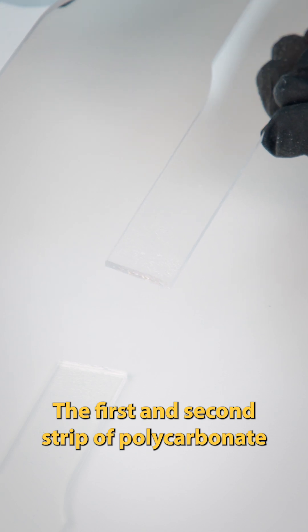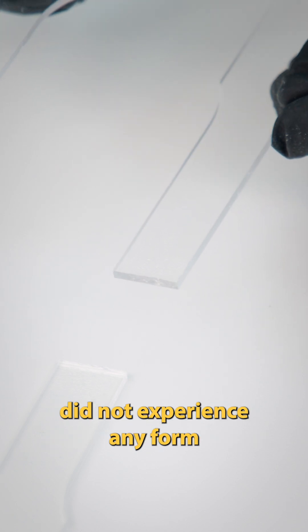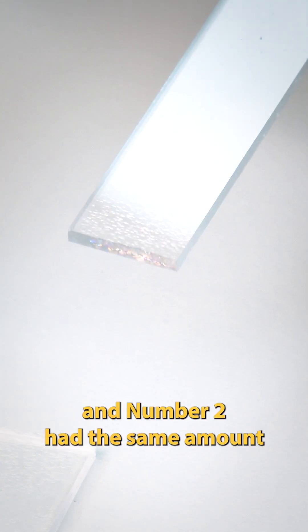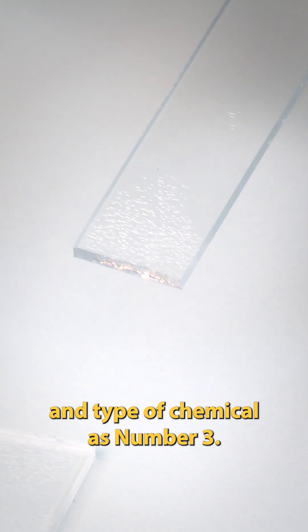However, the first and second strip of polycarbonate did not experience any form of stress cracking, even though number one was under the same amount of stress and number two had the same amount and type of chemical as number three.